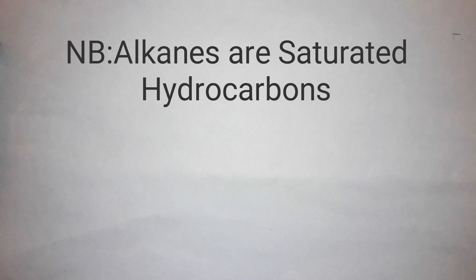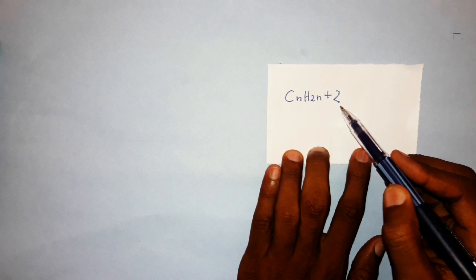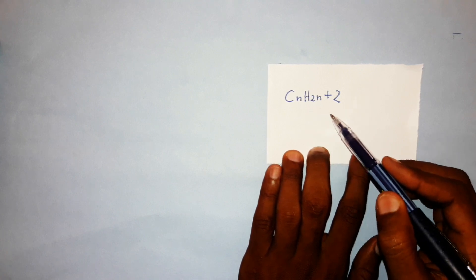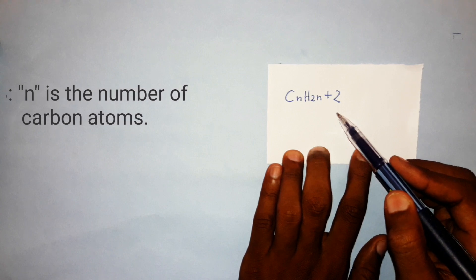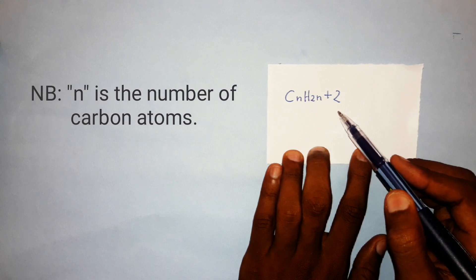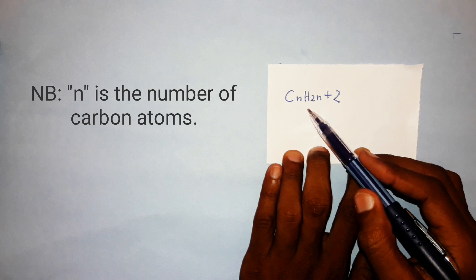Alkanes are a group of saturated hydrocarbons that have at least a single covalent bond in between two adjacent carbon atoms. The general formula is CₙH₂ₙ₊₂, where n is the number of carbon atoms. Whenever you see this general formula, you know it illustrates alkanes.